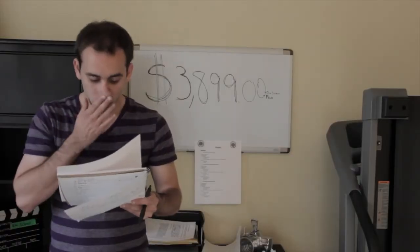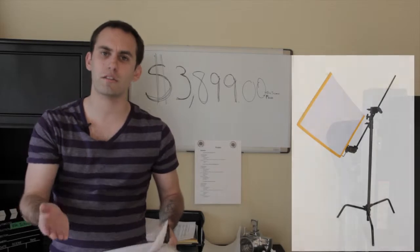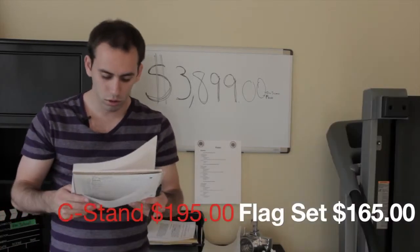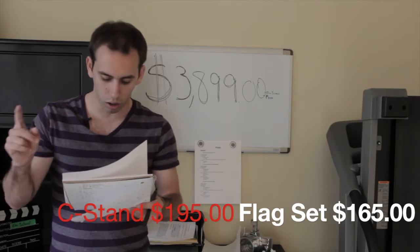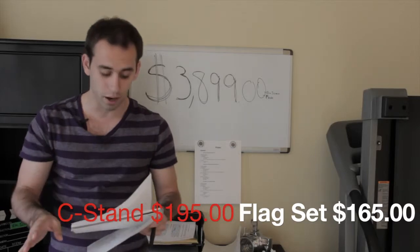Next, I would recommend the flag kit where you can get 18 to 24-inch flags, scrims, silks, black, so you can block some light if you have to in the big light kits. But if you're going to buy that, you also have to buy a C-stand. I found the Avenger C-stand for about $195. And the flag set was about $165.